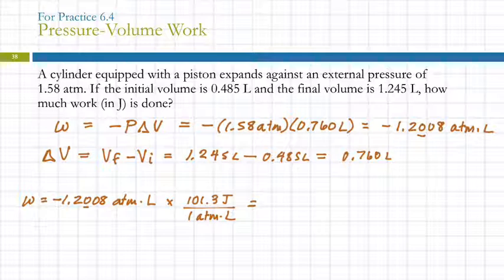So I take that minus 1.2008 and multiply it by 101.3. So still negative 121.64. Three sig figs. Unit is joules now. Minus 122 joules.